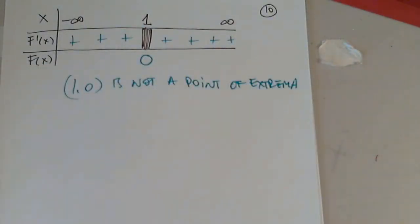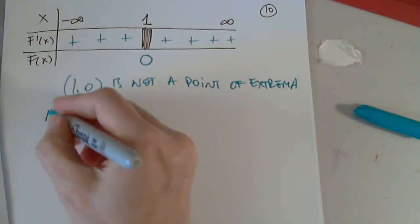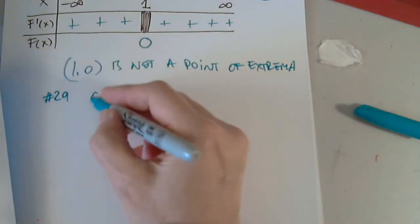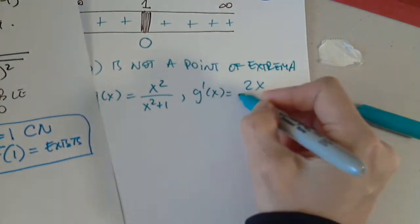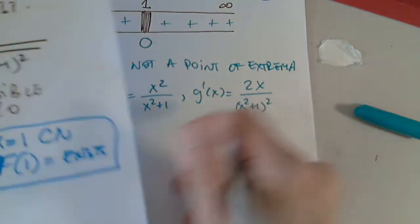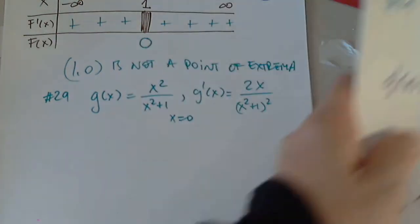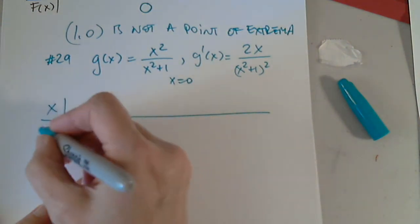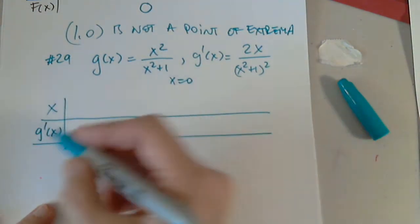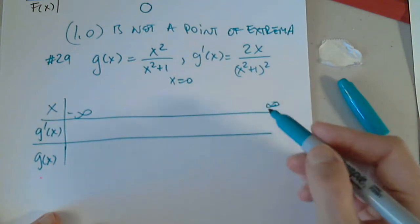Moving on, the next function was 29, and we had g(x) = x²/(x²+1), and we had g prime, yes, this is g prime, 2x/(x²+1)². We found the only critical number was 0, and it came from g prime equals 0. g(x) all real numbers, because x²+1 is never 0, so the function is defined everywhere.